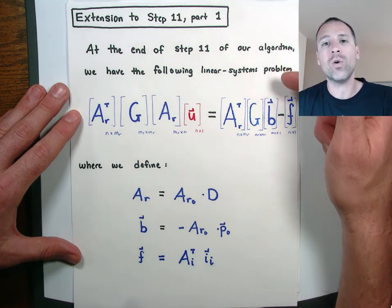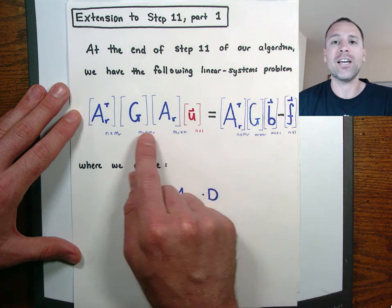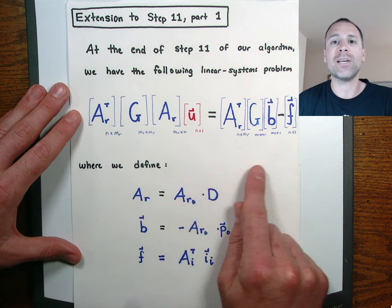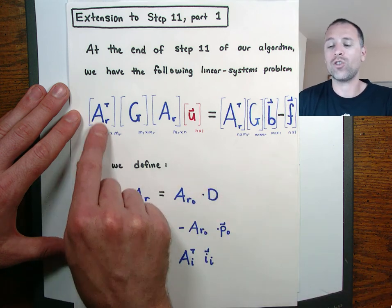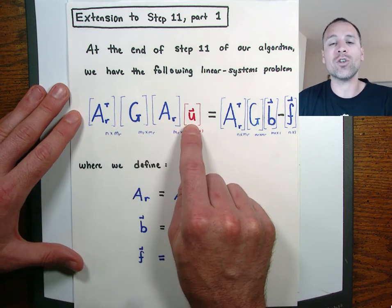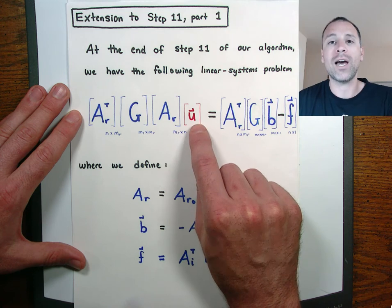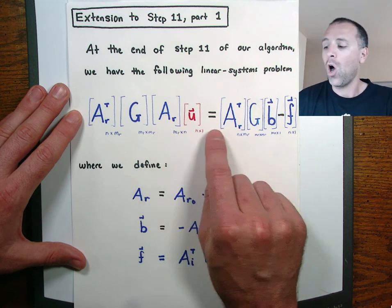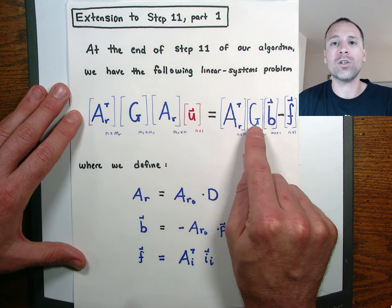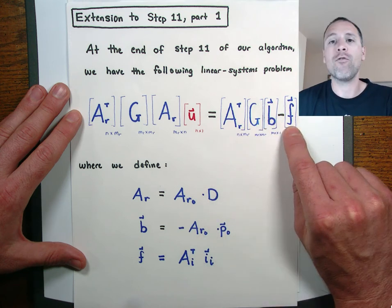At the end of our last video we worked to get to a stage where we could analyze the entire circuit in our example using a linear system. Specifically, we have AR transpose times G times AR multiplied by an unknown vector U. U had a minimal number of node voltage potentials, and once we knew that we could categorize the entire system. On the right hand side we had a non-zero forcing term arising from voltage sources minus the forcing term from the current sources.